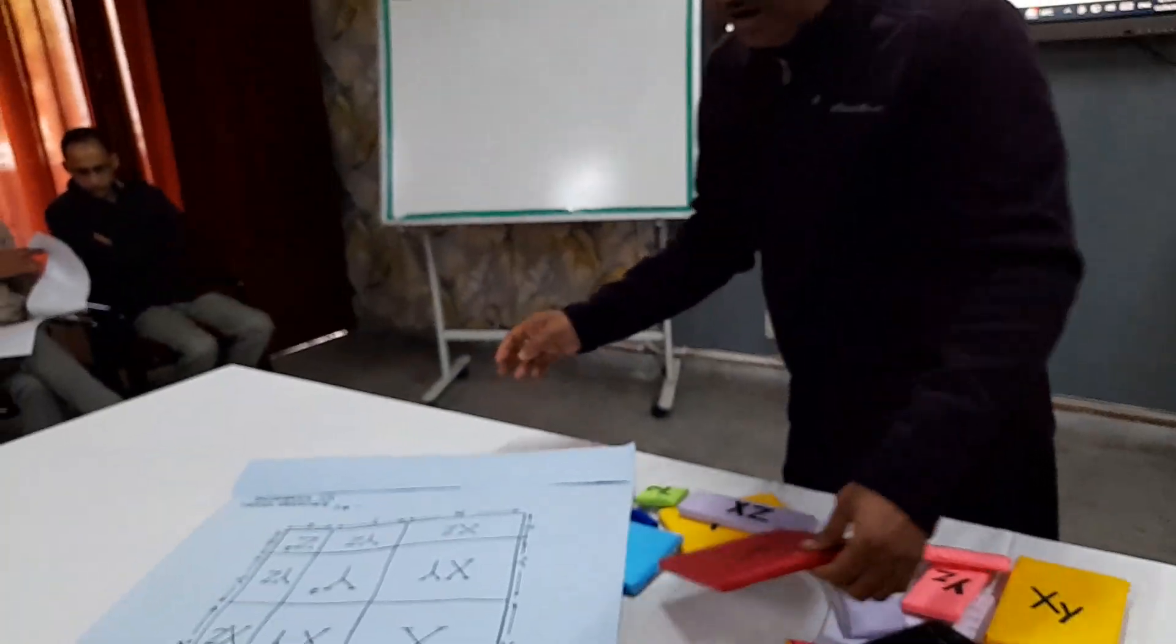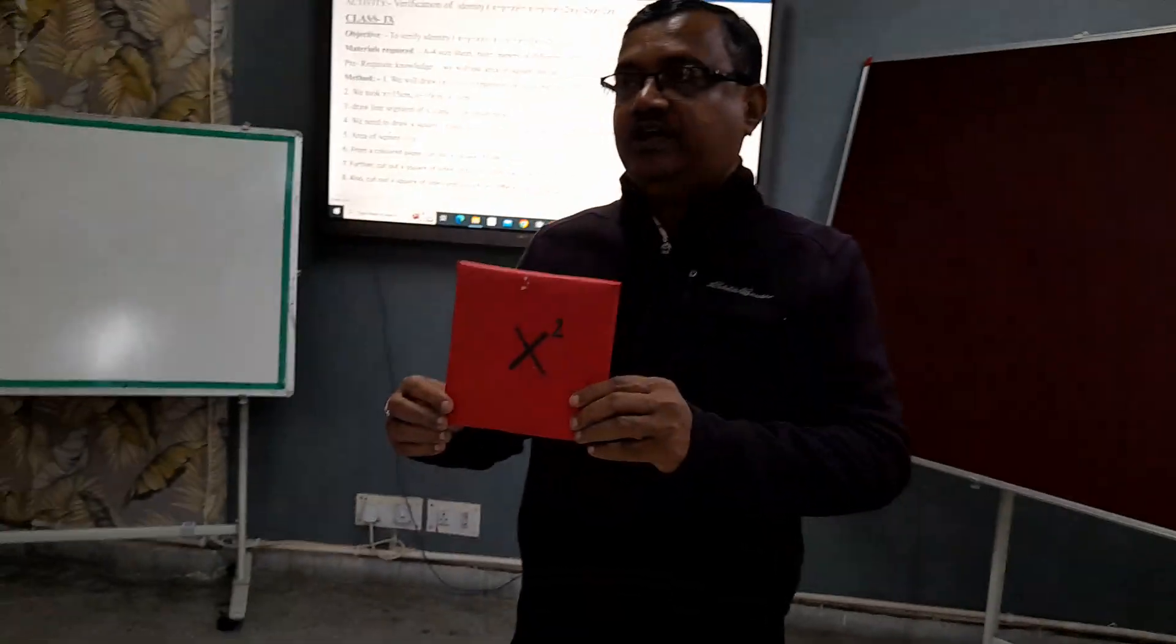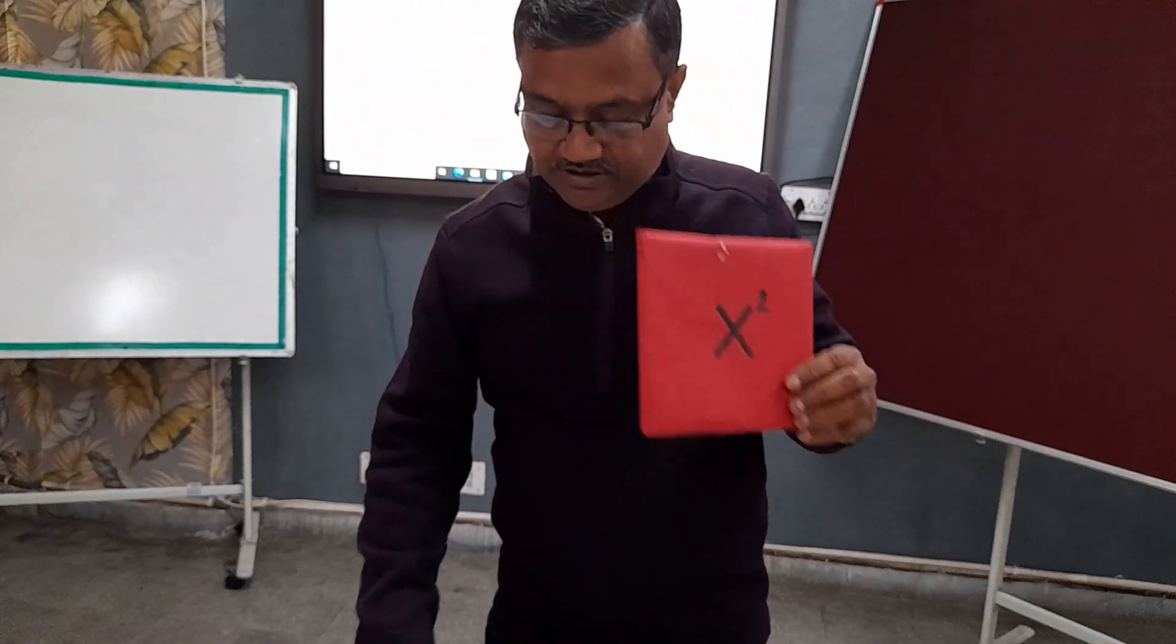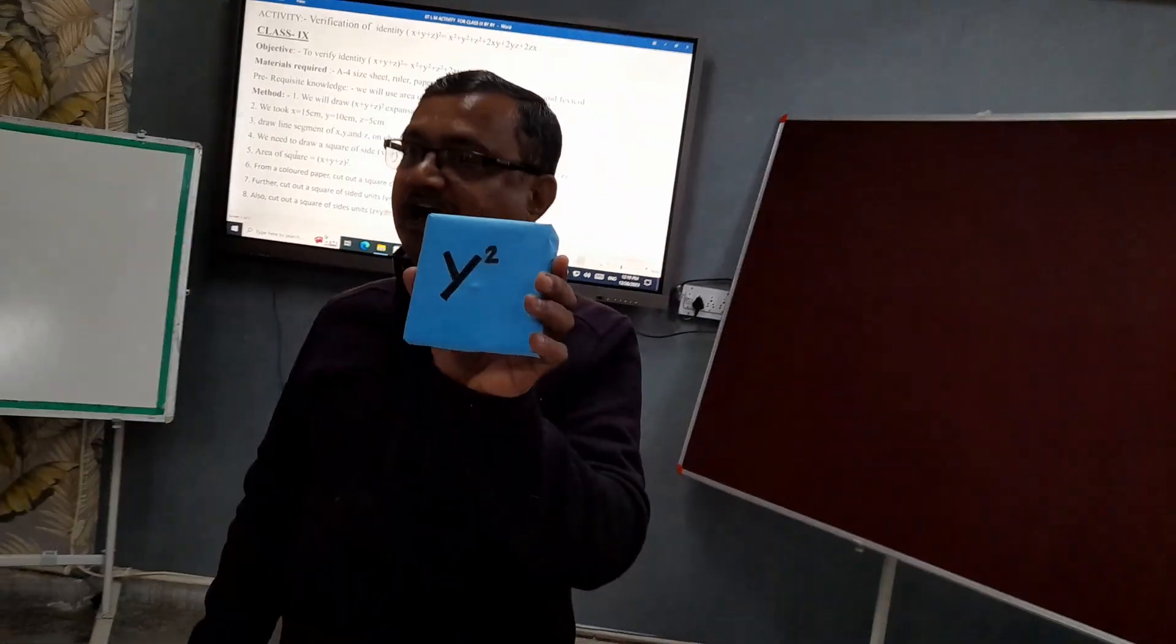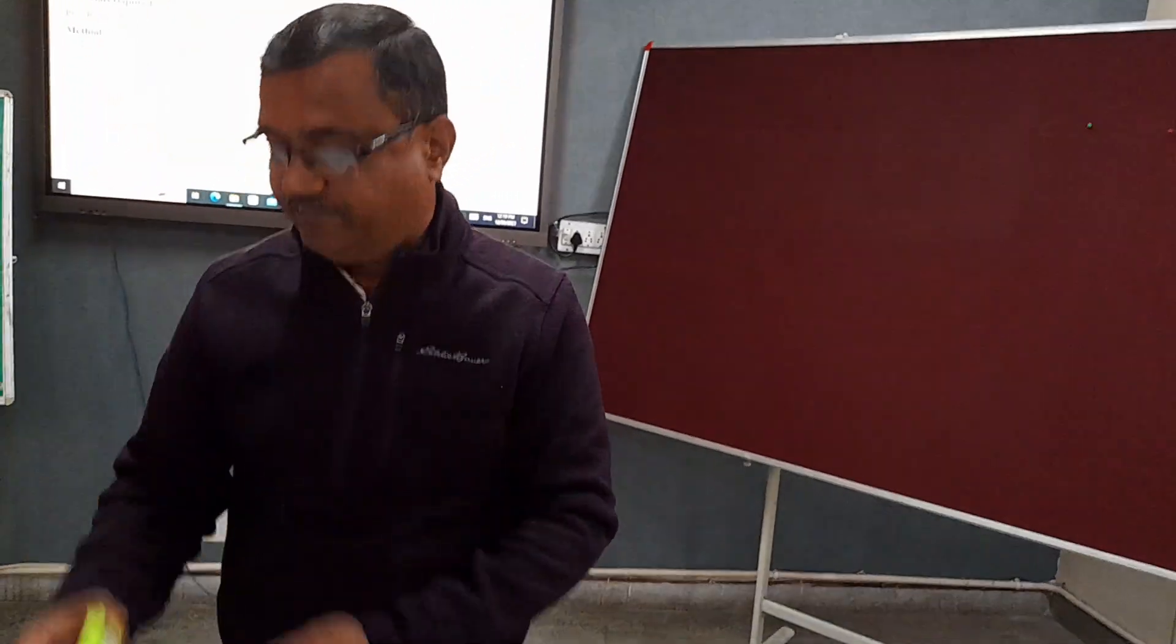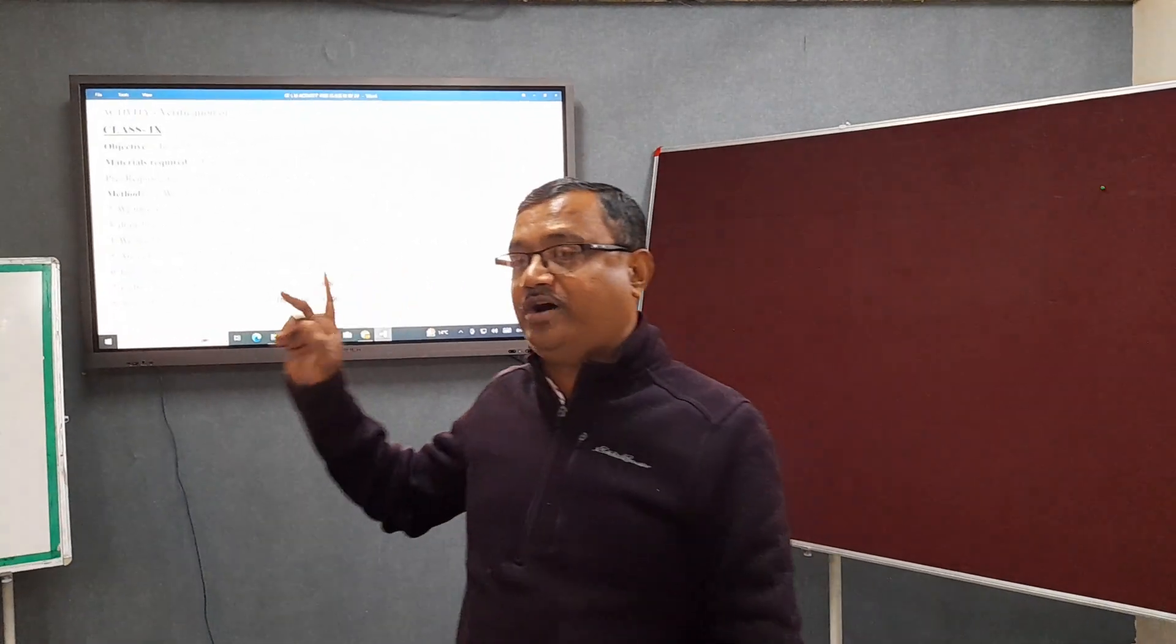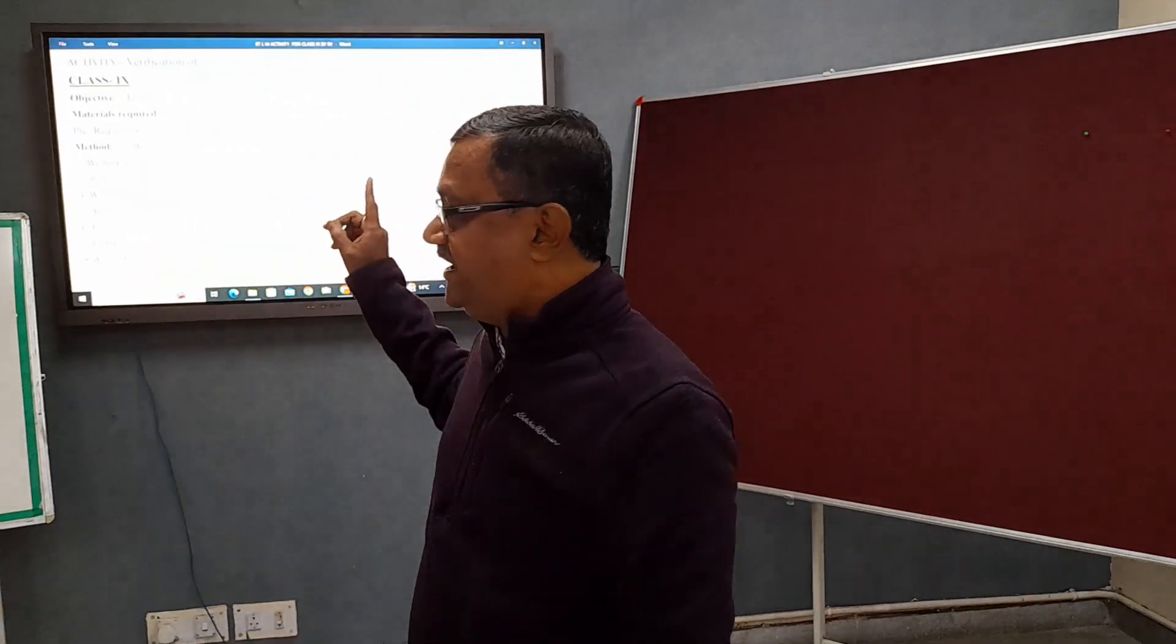For x squared, with the value of x as 10, I have drawn a square of side 10. Similarly for y squared with side 10, and z squared with side 5—three squares. Now for the rectangles, we use two xy, that is length x and y for one pair, then yz and zx.